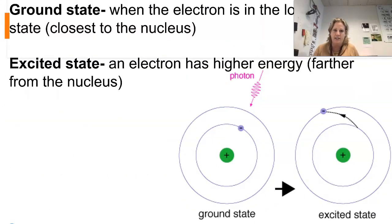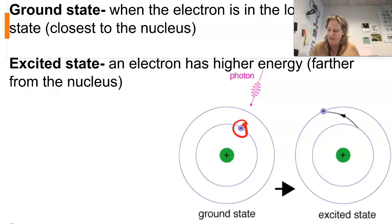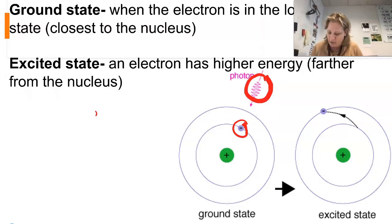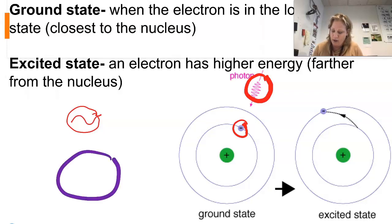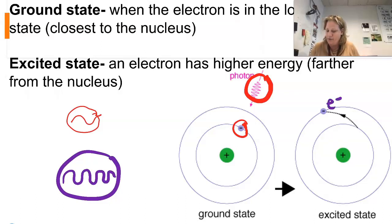In terms of terminology: ground state is when the electron is as close as possible to the nucleus — sometimes called relaxed. Excited state is when the electron has absorbed a photon and is away from the nucleus. A red photon will emit a lower-energy wave, while a violet photon is more energetic with a higher frequency.